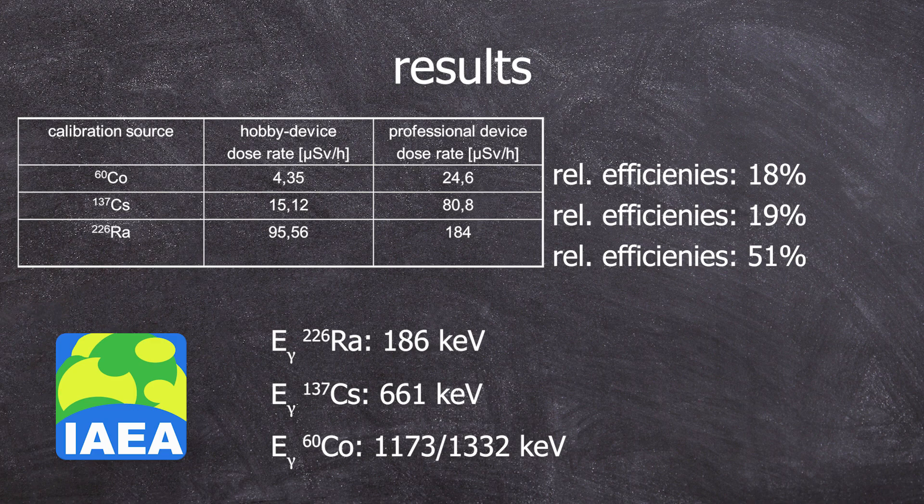One possible explanation for such a difference in the efficiencies is the detector size. It's not only just about the radiation and the source's activity, but the energy must be deposited inside the detector to be measured. In a larger detector, there can be more energy deposited at any time.